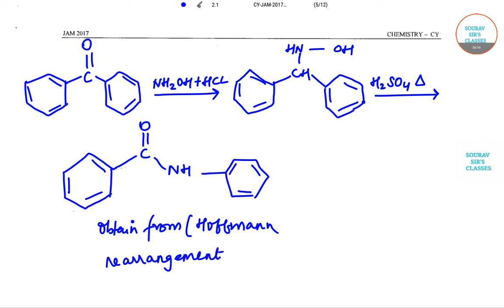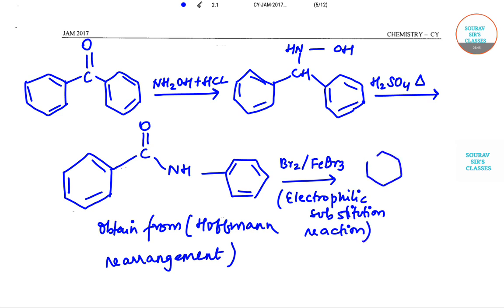So after writing this, we have moved towards the final step. So this is Br2/FeBr3. Okay, that means bromide with iron, and this is electrophilic substitution reaction. And this is given by C NH.